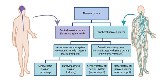The autonomic nervous system is further divided into two parts: sympathetic and parasympathetic. The nervous system includes the brain, spinal cord, and peripheral nerves, and is divided into the central nervous system and peripheral nervous system. The autonomic nervous system controls the activity of internal organs, and the somatic nervous system controls voluntary muscles.